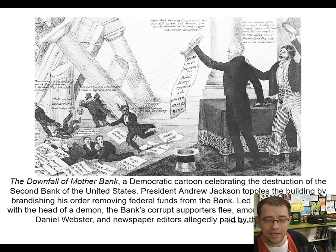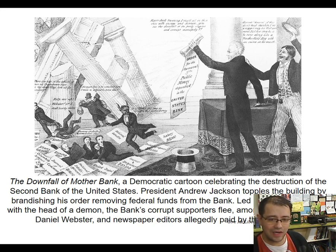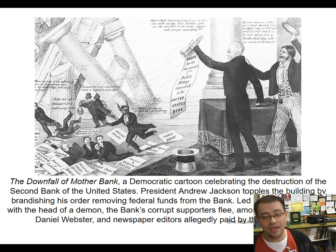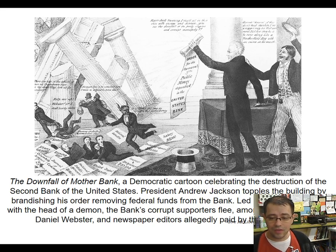If Jackson vetoes the bank, it will start to tank the economy — good for the Whigs and bad for the Democrats. It will also show that Jackson is using the veto not for its intended purpose as a check against unconstitutional acts by Congress, but for a political purpose of defeating a policy he doesn't like. Using it that way is contrary to the entire point of the veto and is kind of tyrannical — it allows the president to overrule Congress anytime he disagrees. If he doesn't veto it, the Whigs still get the bank they wanted, and Jackson would be betraying his own supporters who hate the bank. So it's a win-win for the Whigs either way.